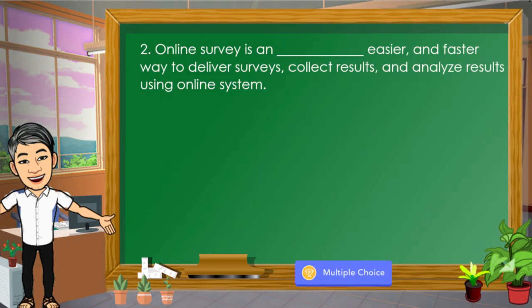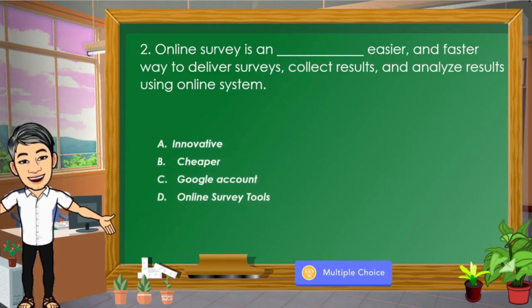Number 2: Online survey is blank — an easier and faster way to deliver surveys, collect results, and analyze results using an online system. The choices are: A. Innovative, B. Cheaper, C. Google account, D. Online survey tools. Letter A is the correct answer.